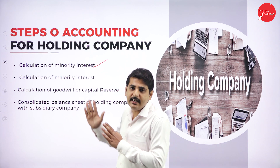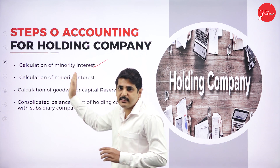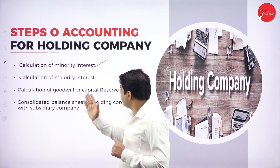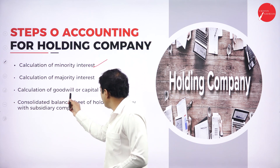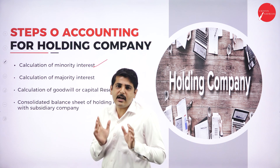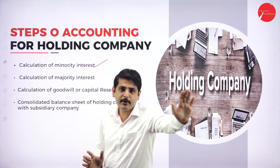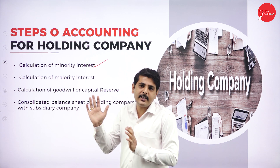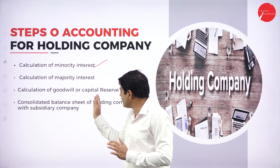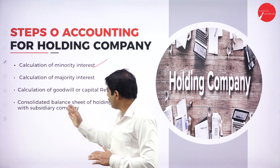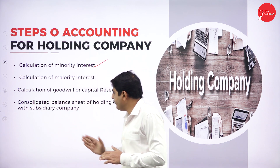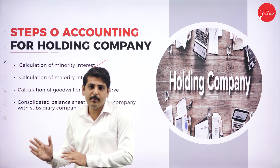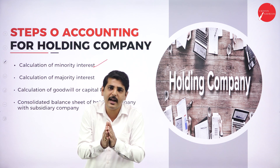Majority interest is the amount belonging to the majority shareholders or holding company. Next, calculate goodwill or capital reserve: if the excess amount paid exceeds the subsidiary's face value, it is goodwill; if lesser, it is capital reserve. Then, prepare the consolidated balance sheet by combining both the holding company's and subsidiary company's balance sheets into one — adding all assets (like buildings) and all liabilities (like creditors and bills payable) together.